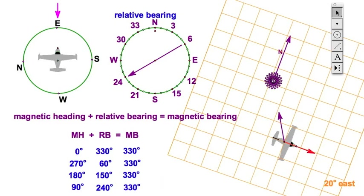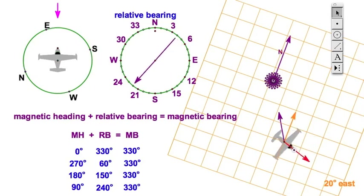Well, of course it is. It's because your magnetic bearing has to do with where the station is, relative to magnetic north. That is what it means to be a magnetic bearing. So, as you can see, as this airplane turns, it doesn't matter where it's turning.